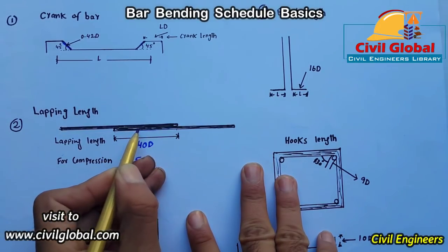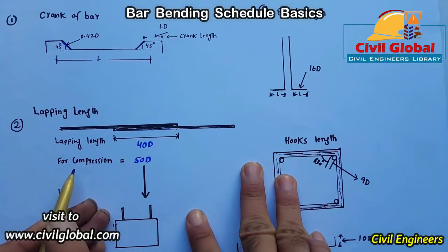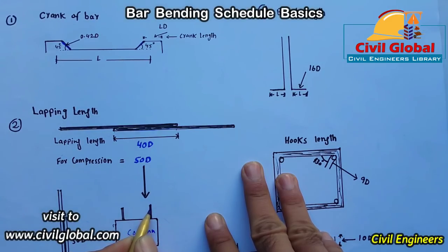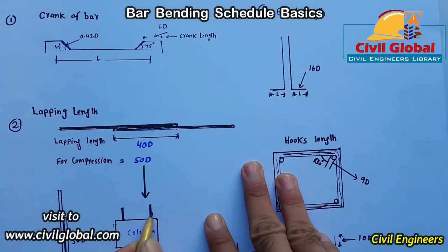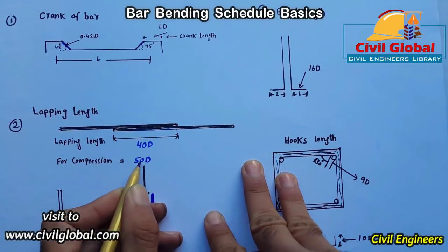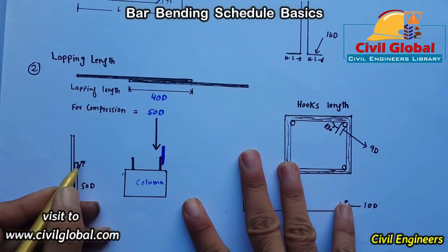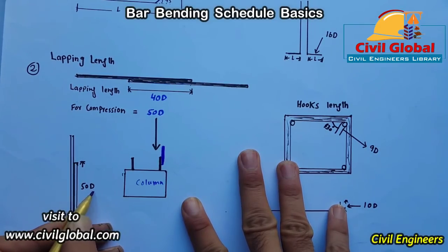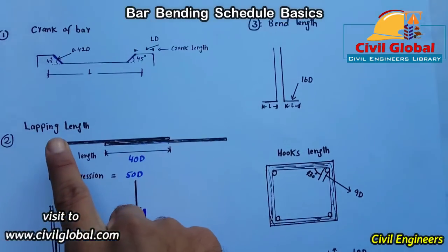For a compression member — the column — the lapping length formula is 50D, where D is the diameter of the steel and 50 is the constant. The lapping length is measured from this point to this point. This is the second basic of bar bending schedule and it is very important.